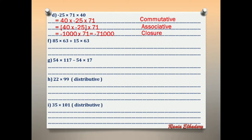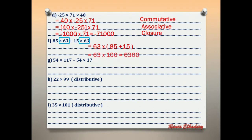Letter F: 85 × 63 + 15 × 63. Circle the repeated number 63. Write 63 once and open a bracket: 63 × (85 + 15). This is the distributive property. 85 + 15 = 100. 100 × 63 = 6,300.